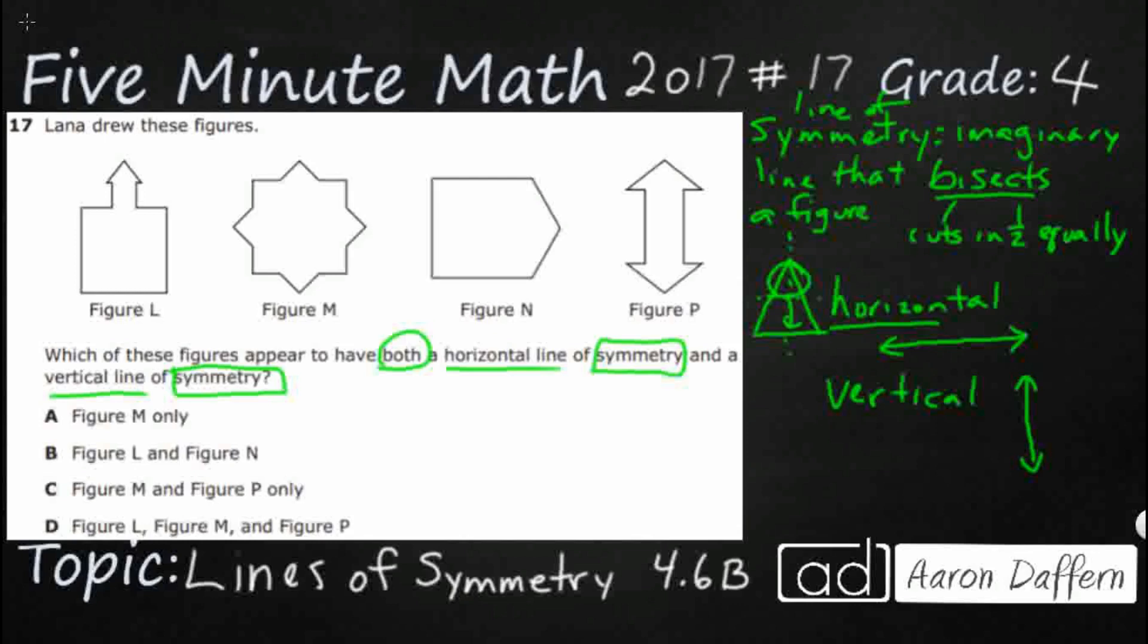Now we're ready to see which of these figures appear to have both. And as you can see, your answers can be just one, could be two, or it could even be three. So there's not going to be just one unless it's just figure M. It could be more than one. That makes this kind of tricky.